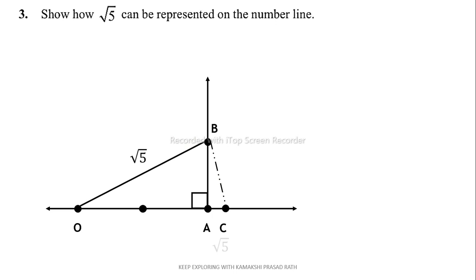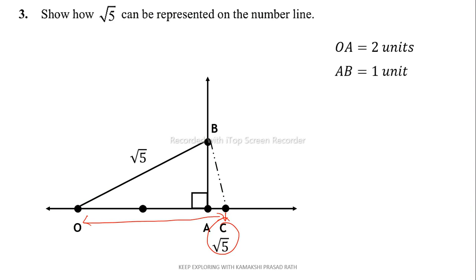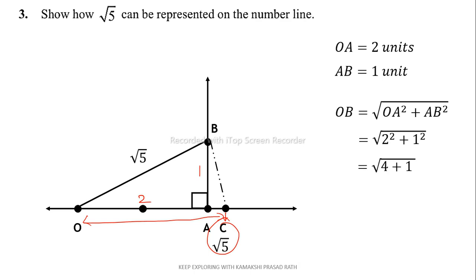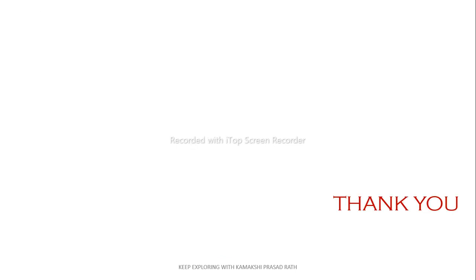OB and OC are the same measurement — you take the same radius and put it on the number line. Point C represents √5, so OC is √5 units. To verify: OA is 2 units, AB is 1 unit, so OB = √(OA² + AB²) = √(4 + 1) = √5 by the Pythagorean property. Since OC equals OB, OC is √5 units. In this way we can represent any irrational number on the number line using the Pythagorean property. Thank you.